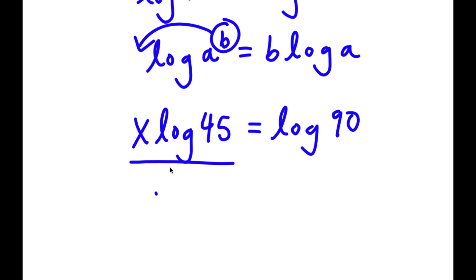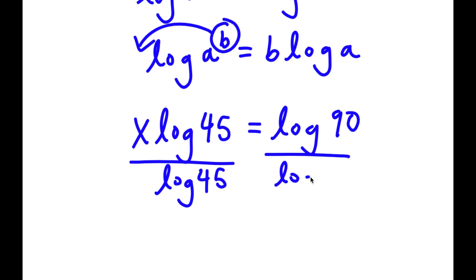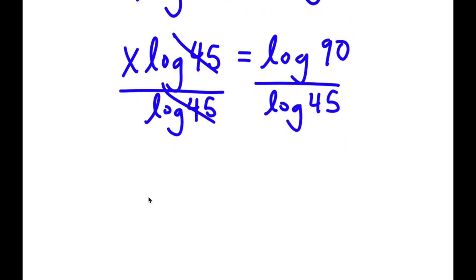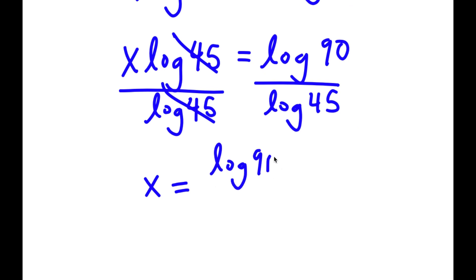If I divide both sides by log 45, these two cancel out. And now I have x is equal to log 90 over log 45.